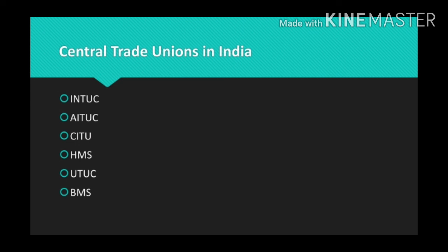CITU, the Centre of Indian Trade Unions, was formed in 1970. HMS, Hind Mazdoor Sabha, was formed in 1948. UTUC, the United Trade Union Congress, is another central trade union. BMS, Bharatiya Mazdoor Sangh, was formed in 1955.